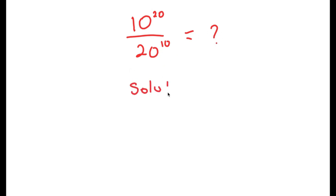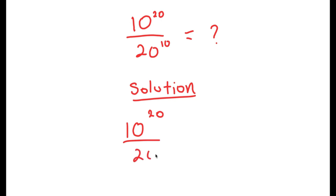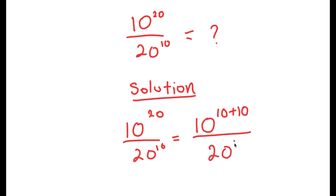For my solution, what I'm first going to do is rewrite this as 10 to the power of 10 to the power of 20 over 20 to the power of 10. And I'm going to rewrite this as 10 to the power of 10 plus 10 over 20 to the power of 10. So I rewrote my exponent 20 as 10 plus 10.